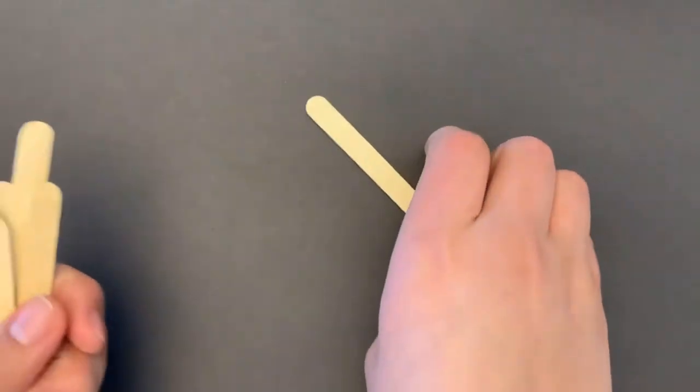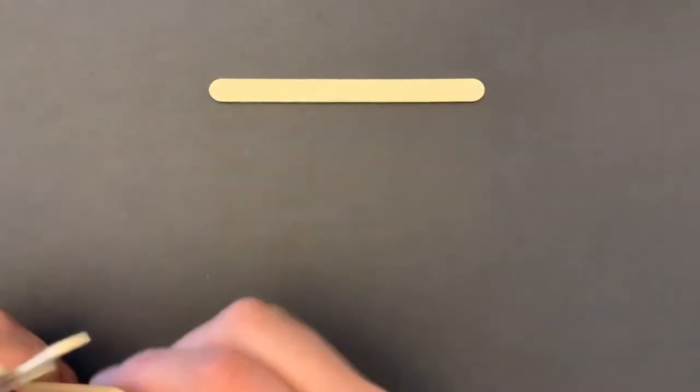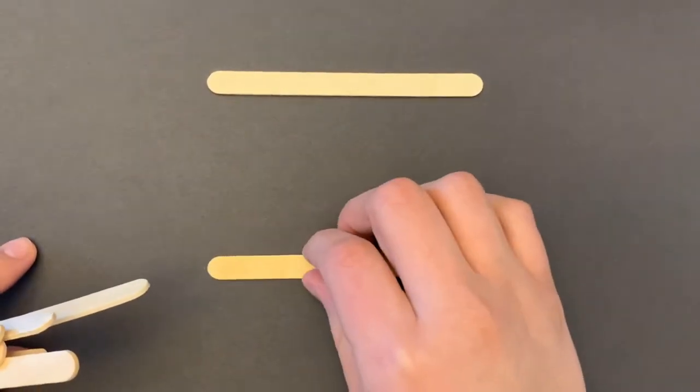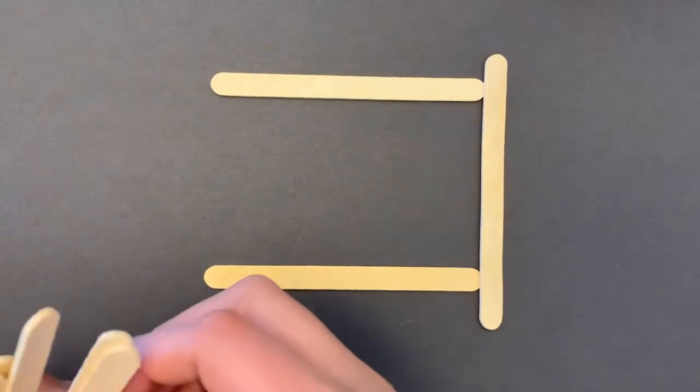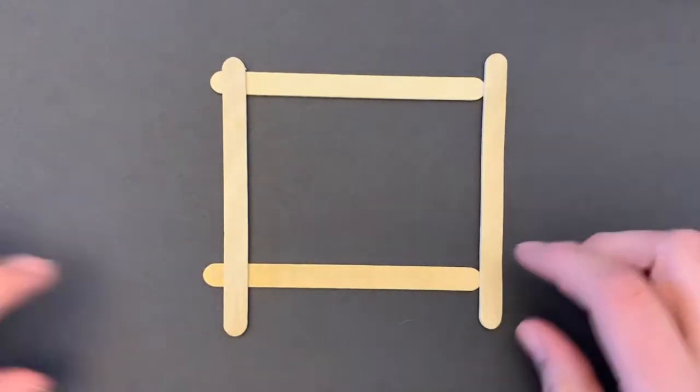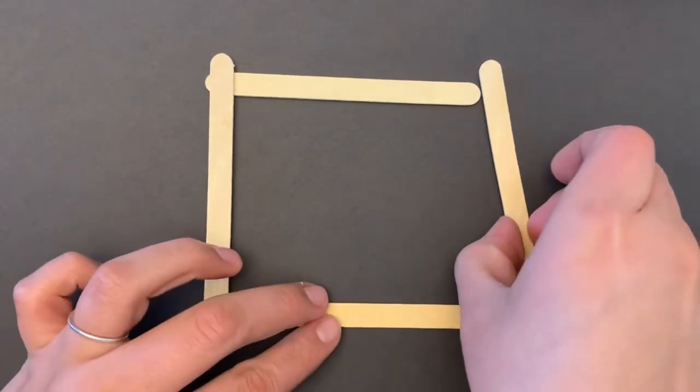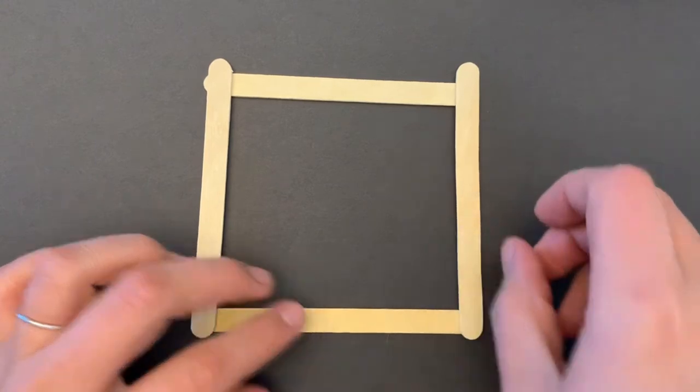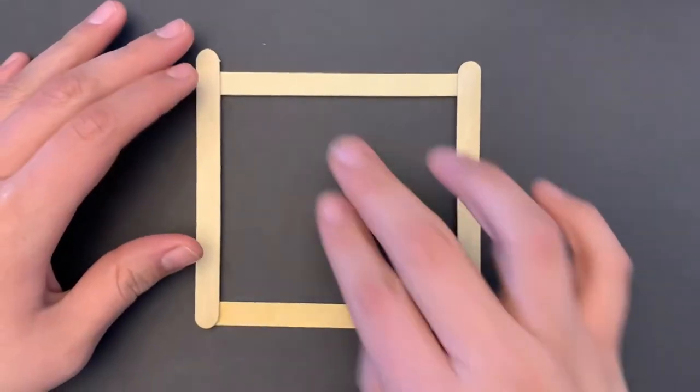As we get started, the biggest thing that we're going to be needing is the popsicle sticks to make our small frame. This is me just measuring off a square shape. I like to put two down first and then two on top of that.